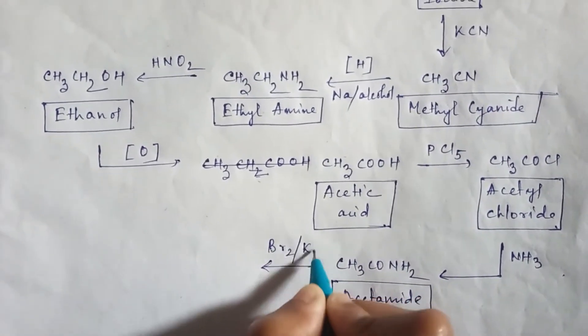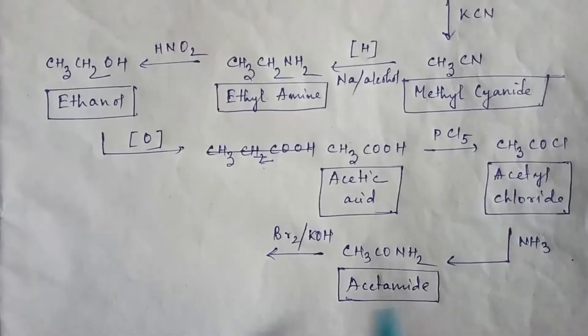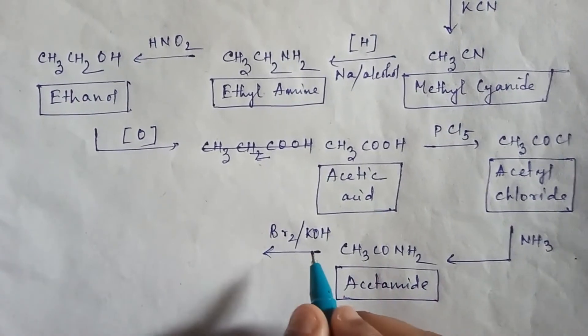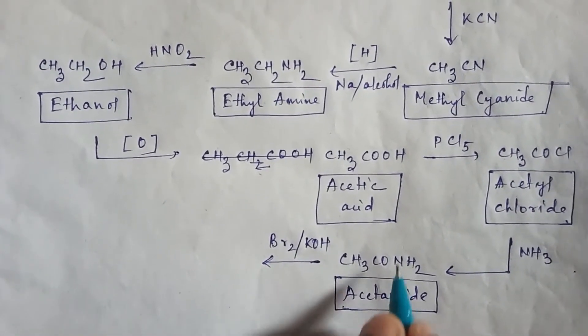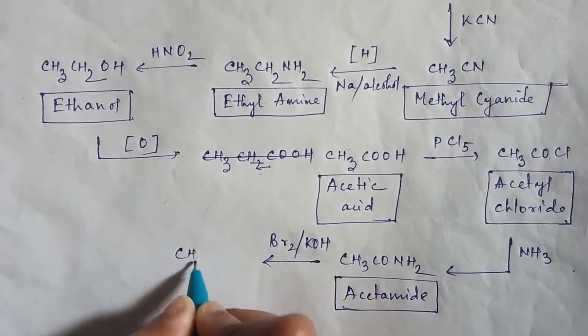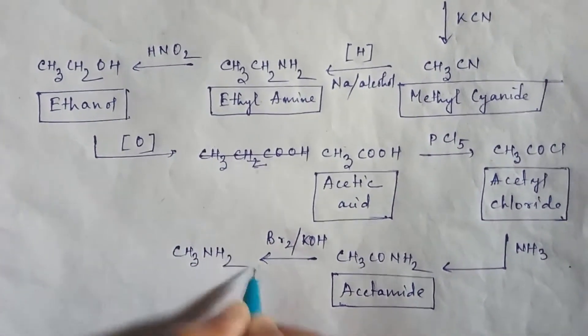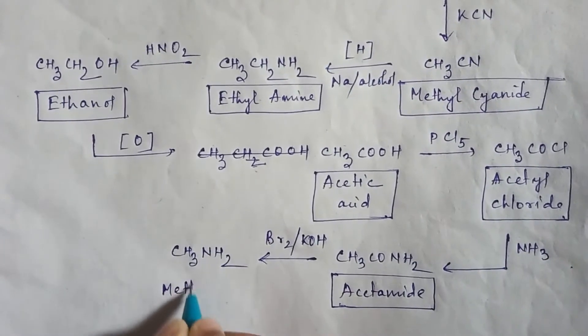Then if you use here bromine KOH in acetamide, which is Hofmann bromide reaction, then this CO group will be removed and you will easily get CH3NH2, that is methyl amine.